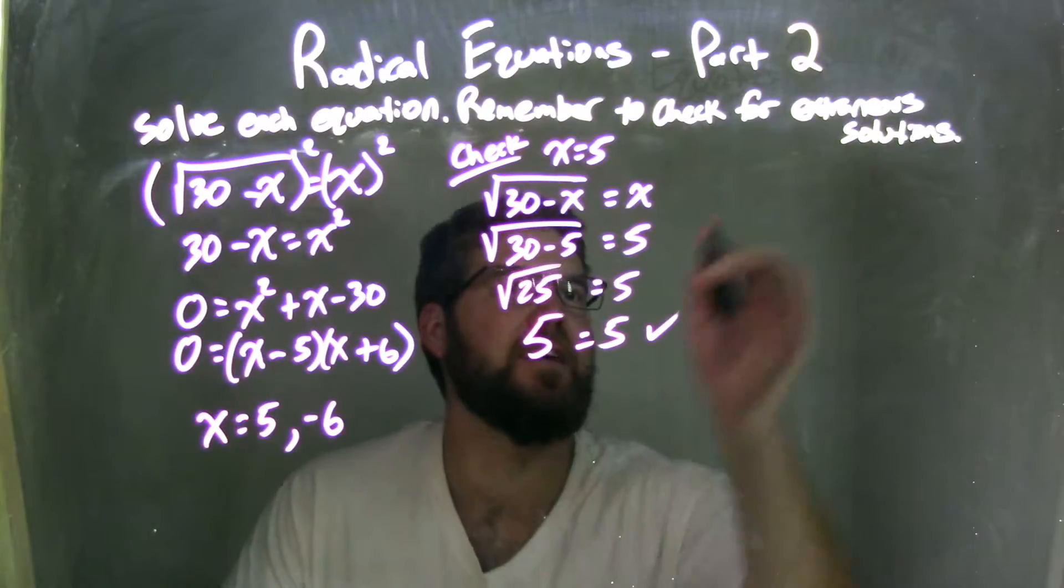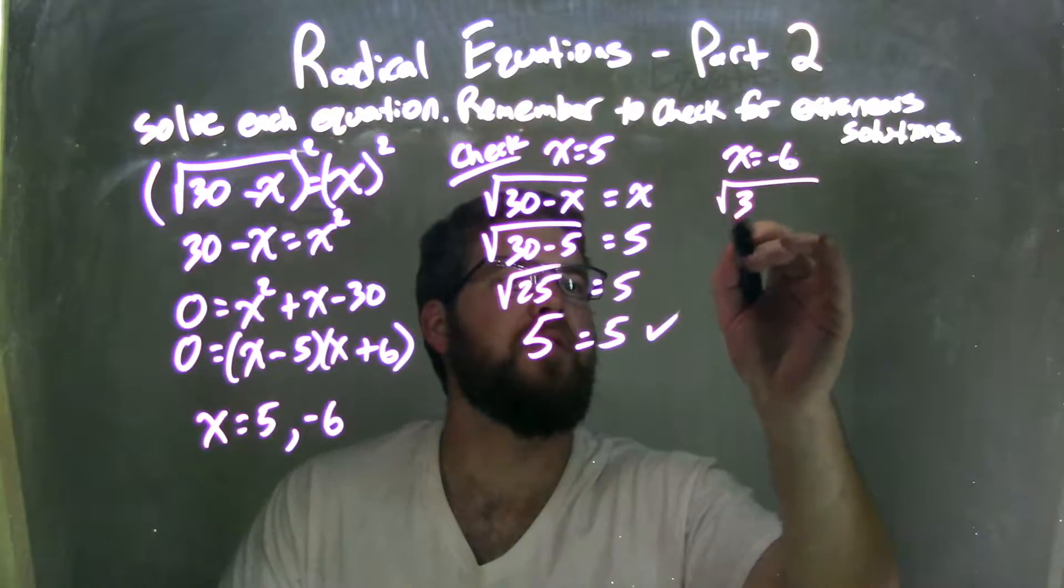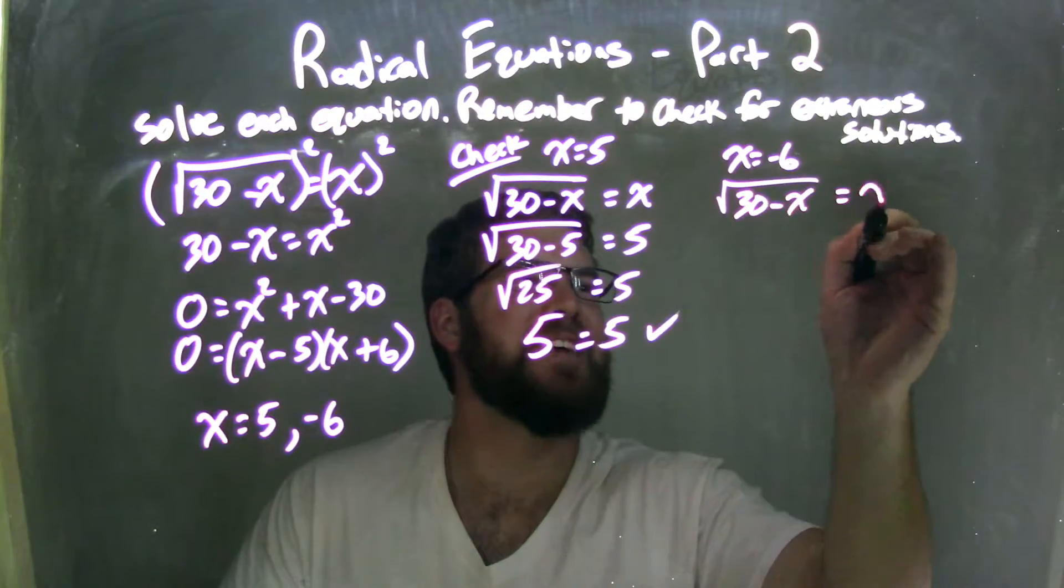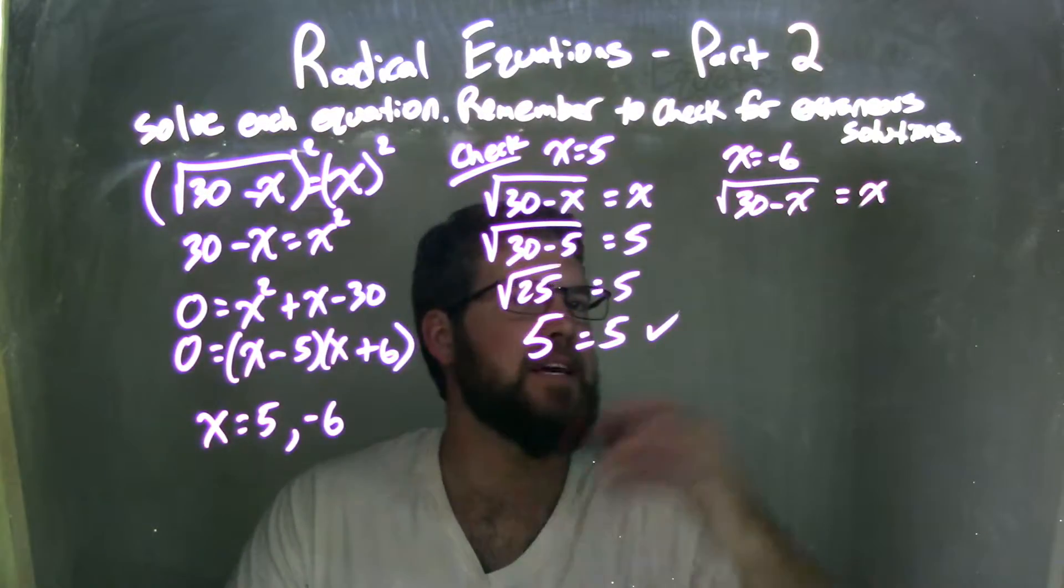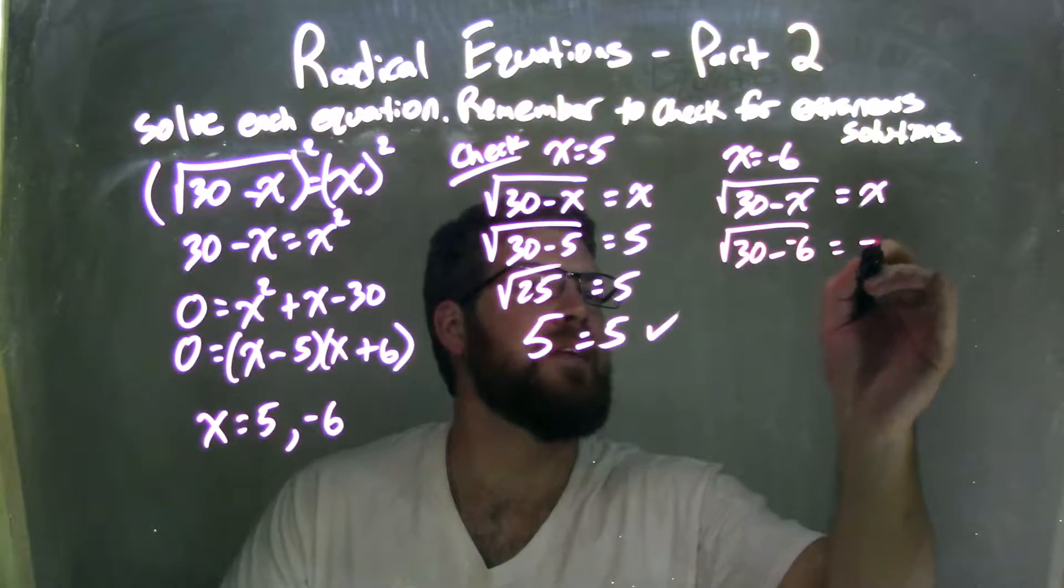Let's go check negative 6, so I have x equals negative 6 here. Let's go rewrite my equation, 30 minus x equals x. Plug negative 6 in for x, so we have 30 minus a negative 6 equals negative 6 on the right.